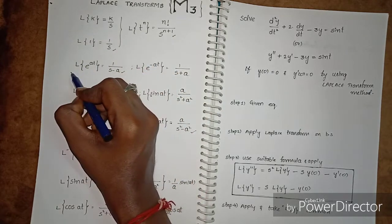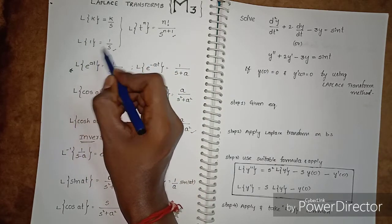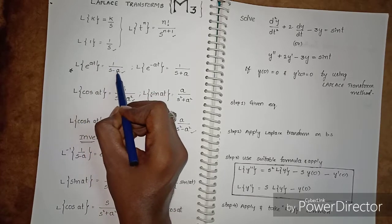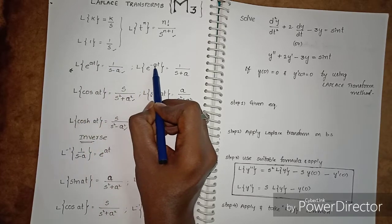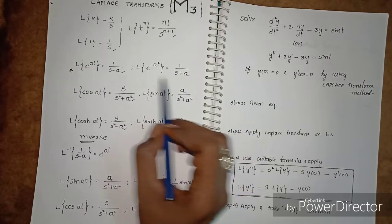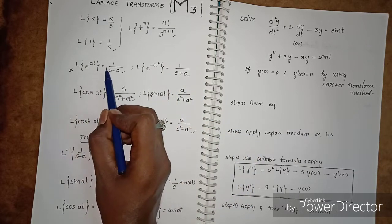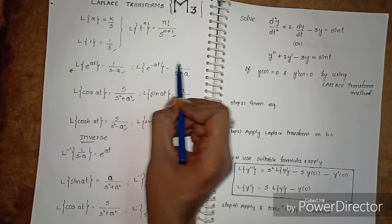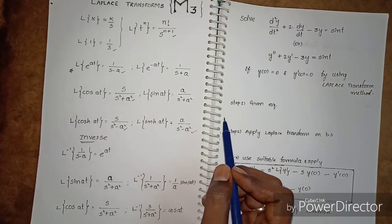A very important formula: L of e power at equals 1 by s minus a. L of e power at is 1 by s minus a. That is, L of e power minus at equals 1 by s plus a. Very easy and simple.